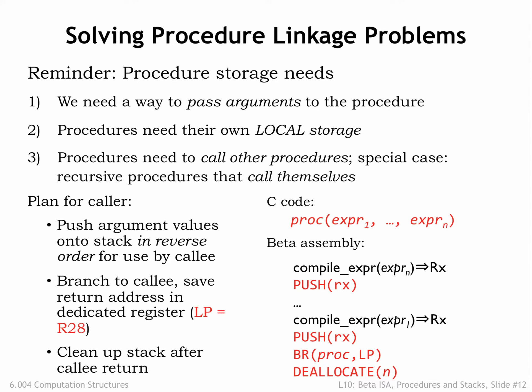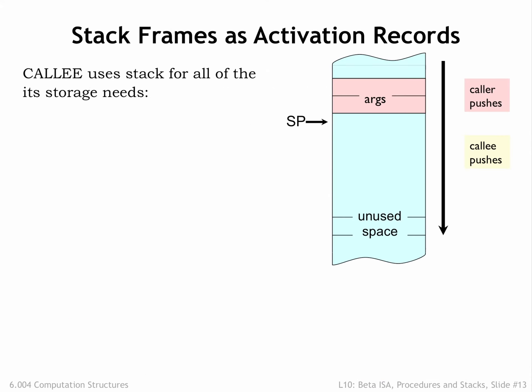That's the code the compiler generates for the procedure. The rest of the work happens in the called procedure. The code at the start of the called procedure completes the allocation of the activation record. Since when we're done, the activation record will occupy a bunch of consecutive words on the stack, we'll sometimes refer to the activation record as a stack frame to remind us of where it lives.